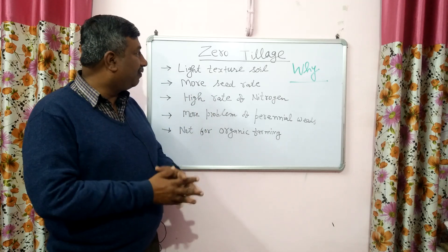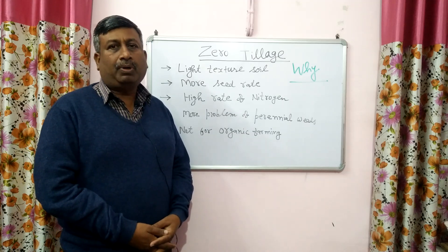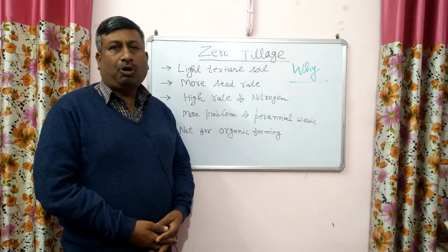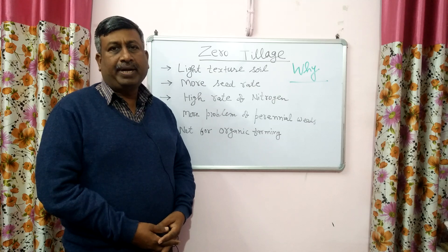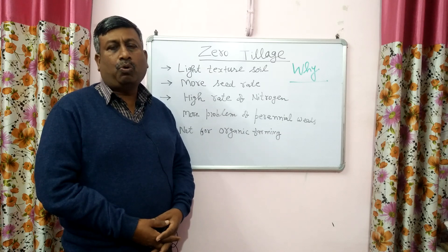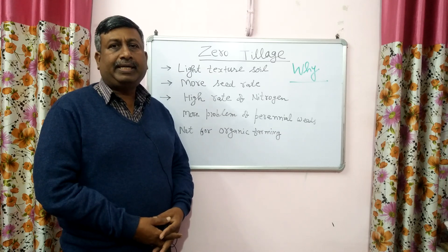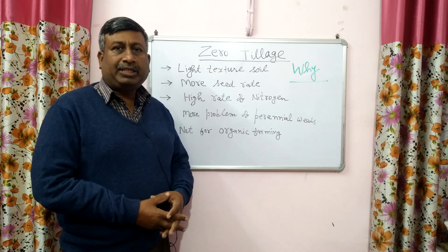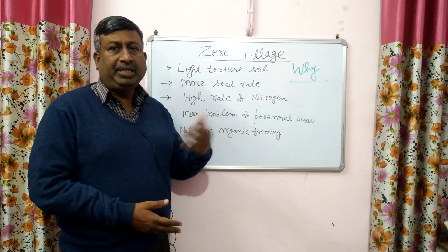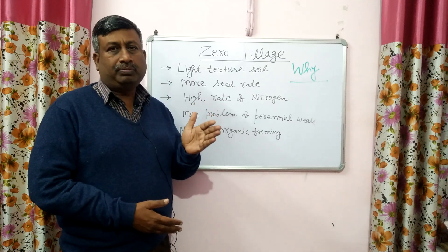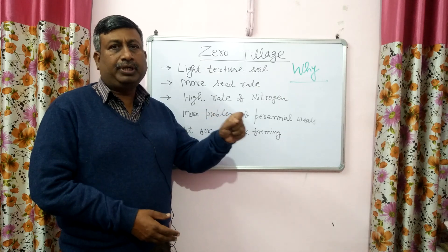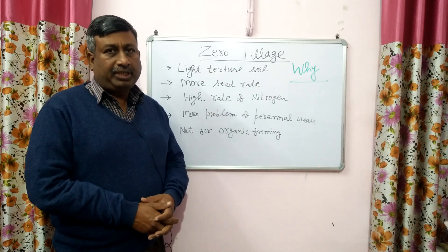First of all, we should know about zero tillage. As the name indicates, there is no tillage operation in the soil — only furrow opening is done. So it is the extreme form of minimum tillage where tillage is restricted only to the opening of a furrow. In zero tillage, we open the furrow by a 40 seed drill or any other means, put seeds in the furrow, and that constitutes zero tillage.